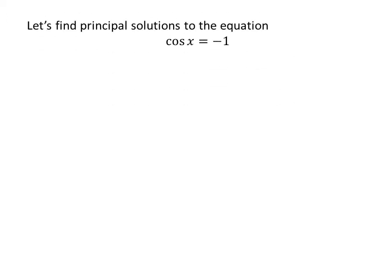Let's first find the principal solutions to the equation cosine of x is equal to minus 1. We know the solutions to the trigonometric equation for which x is greater than or equal to 0 and less than 2π are the principal solutions.